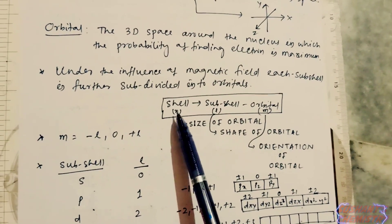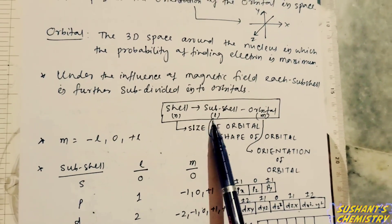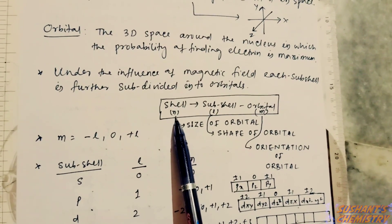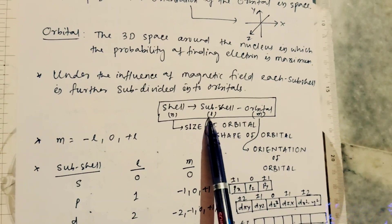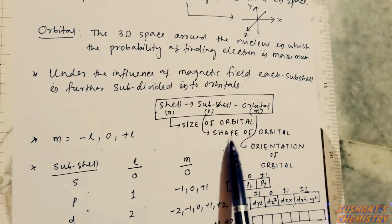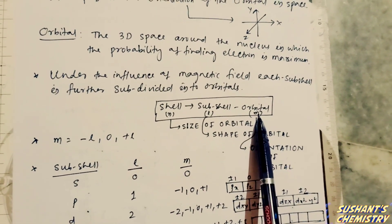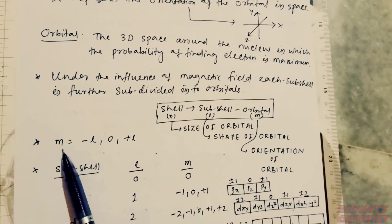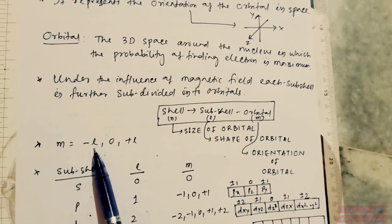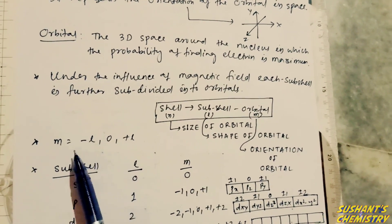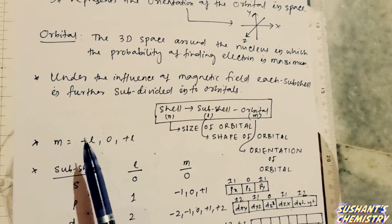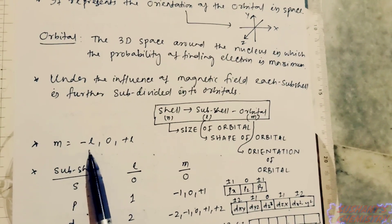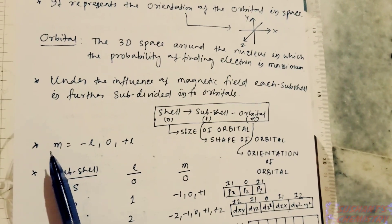Inside the shell, subshells are present, and inside the subshell, orbitals are present. The value of n signifies the size of the orbital, l signifies the shape of the orbital, and m signifies the orientation of the orbital. The value of m lies between minus l to plus l through zero, meaning the value of m depends upon the l value — the magnetic quantum number depends upon the azimuthal quantum number.